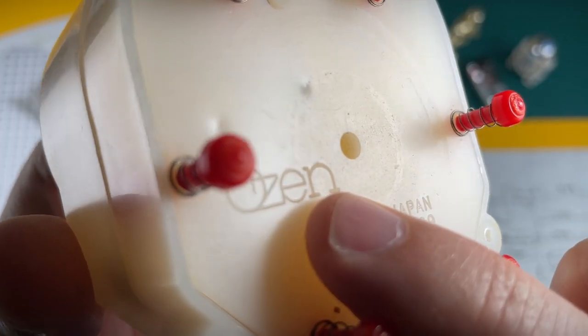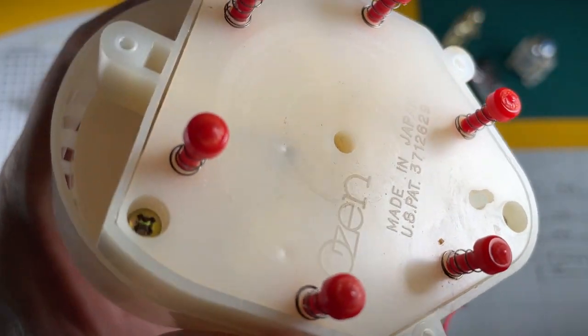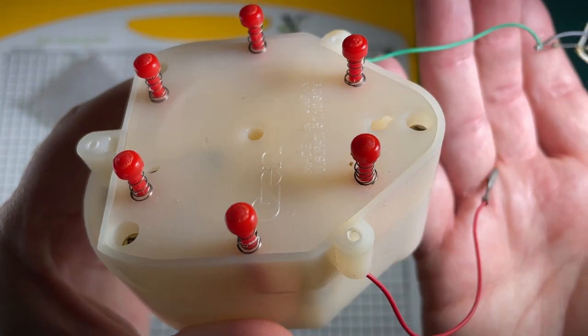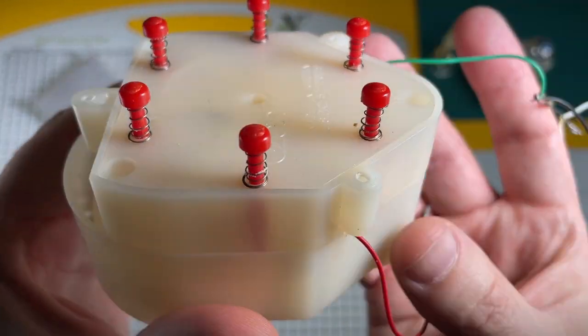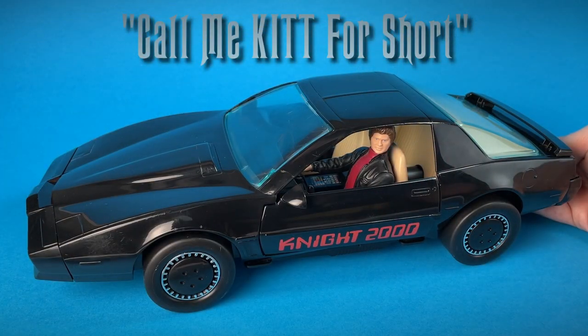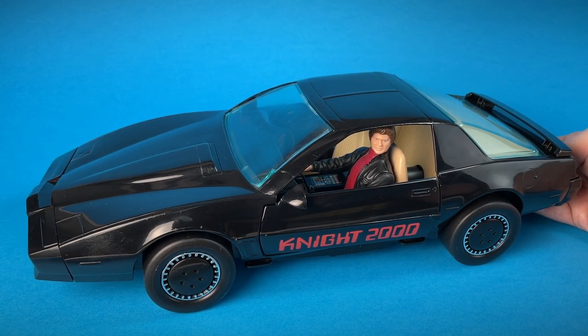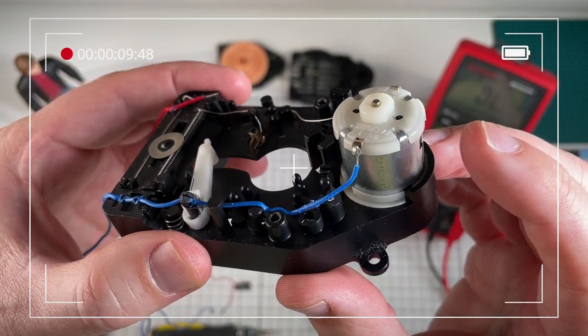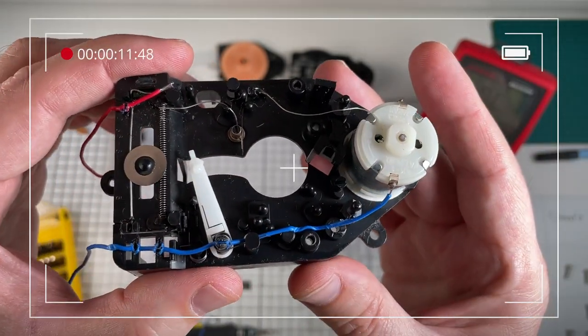I don't know if you can read that clearly but this record player is manufactured by Ozen. Now that name may be familiar to you because they also provided the voice box for the Kenner Knight 2000 voice car kit. In fact I've done a full restoration of Kit as well so you can look at that video if you wish.